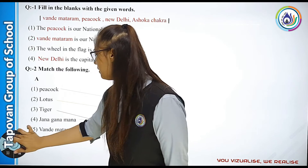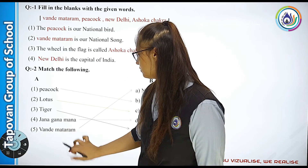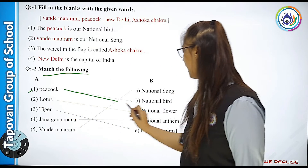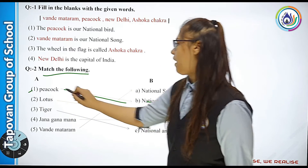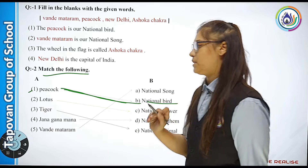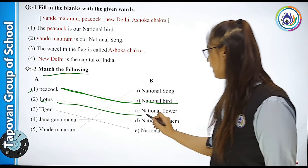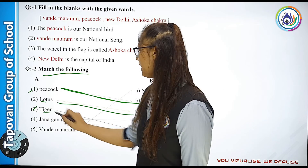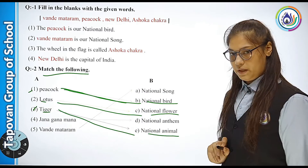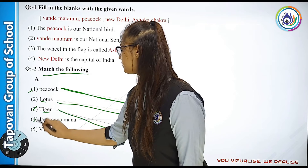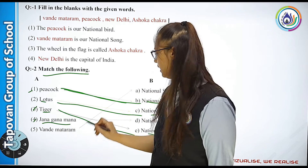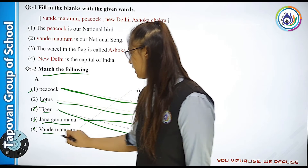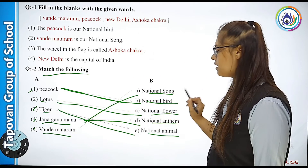Now: match the following. First — Peacock, what is it? National Bird. Match it. Lotus — what is Lotus? National Flower. Third — Tiger, what is Tiger? National Animal. Jana Gana Mana — what is it? National Anthem. Fifth — Vande Mataram, what is it? National Song.